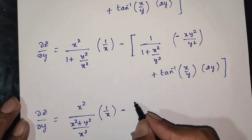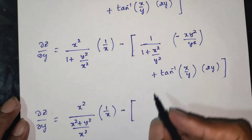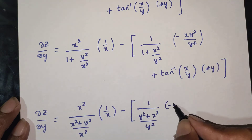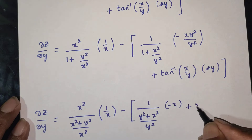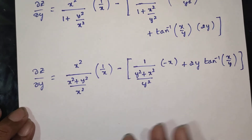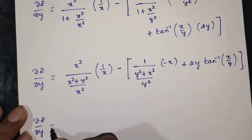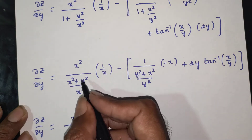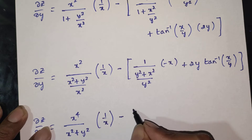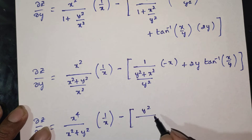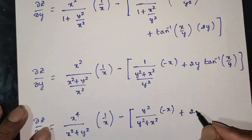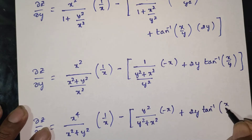Simplifying dou z by dou y: x square divided by x square plus y square, into 1 by x — the y square terms cancel — so we get x square over x square plus y square into x, minus the remaining terms. After simplification we get x squared over x y terms, plus x square minus y square grouped over x square plus y square, plus terms from tan inverse of x by y into 2y.